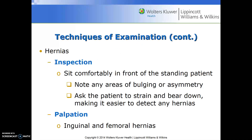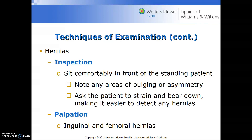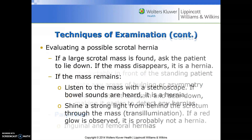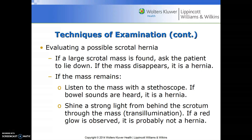For hernias, sit comfortably in front of the standing patient on your stool. Note any areas of bulging or asymmetry, and ask the patient to strain or bear down — this increases abdominal pressure, making it easier to detect hernias. You might also ask them to turn their head and cough. In evaluating a possible scrotal hernia, if a large scrotal mass is found, ask the patient to lie down. If the mass disappears, it's more than likely a hernia.